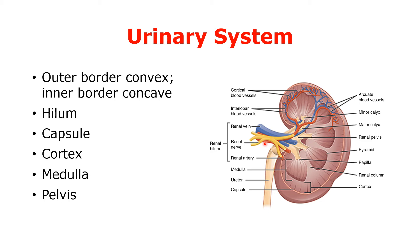Like any other organ, for the normal functioning of the kidney, blood and nerve supply are essential. When we look at the structures present inside the kidney, we see that the kidney is surrounded by a fibrous capsule — a protective covering outside the kidney. Inside the capsule, the first layer of the kidney is called the cortex. Below the cortex, the second layer called the medulla is present.